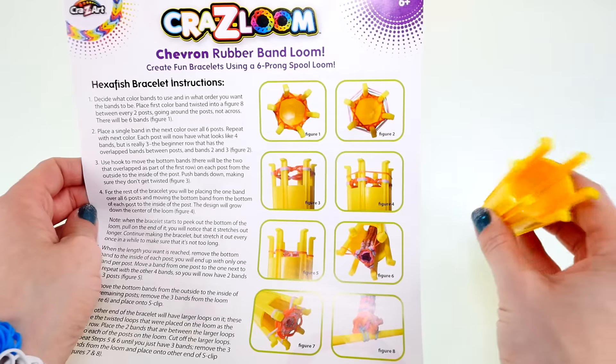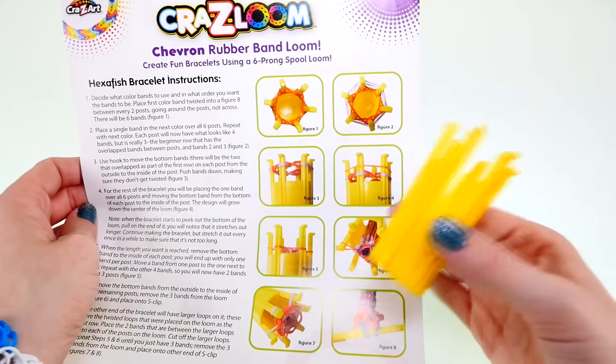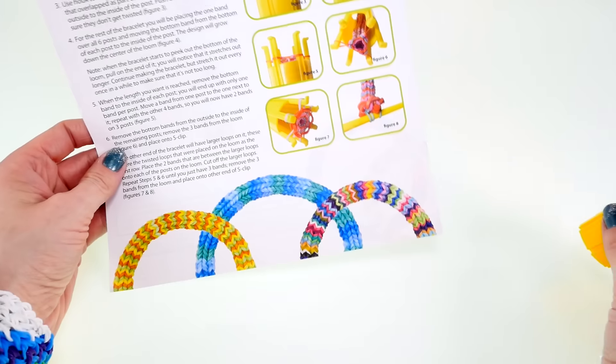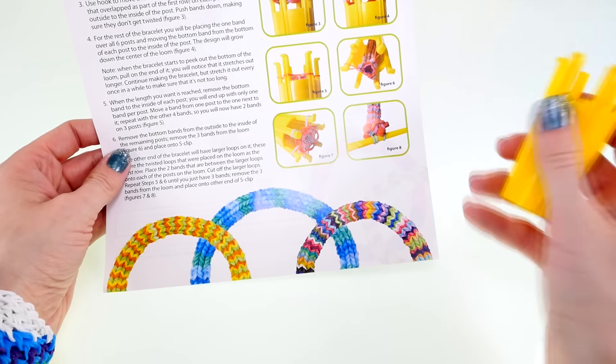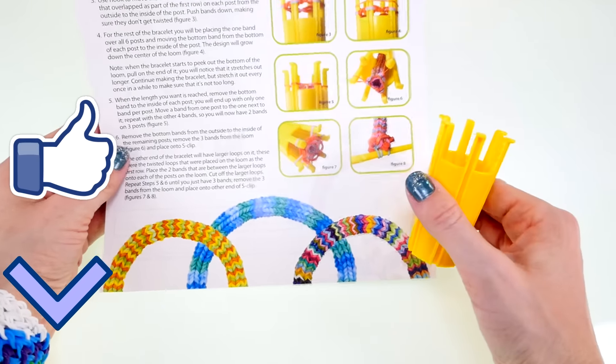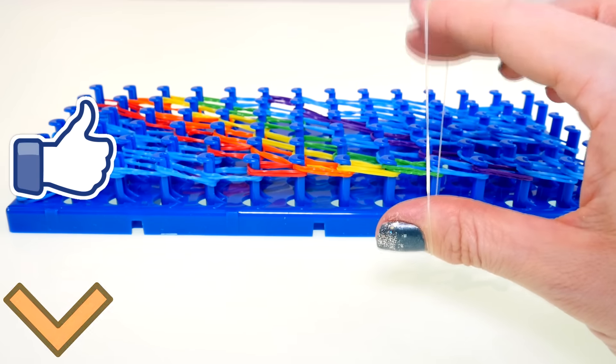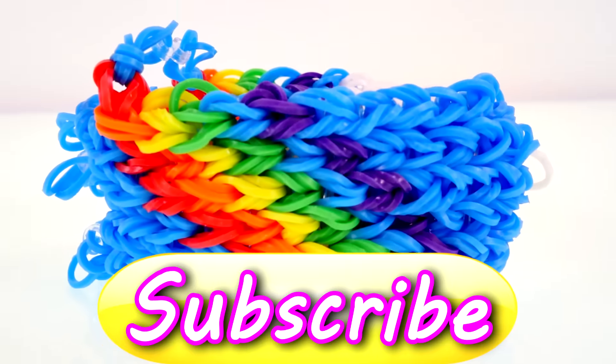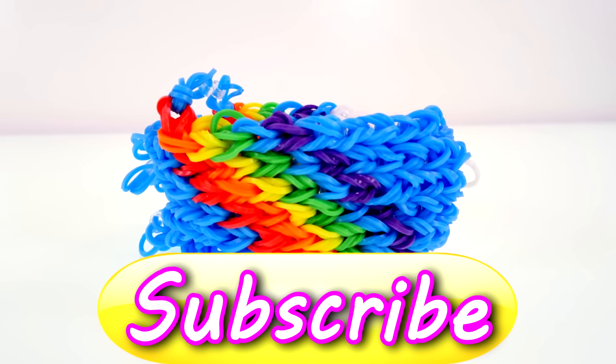And this kit also includes a hexagonal loom. You can make these fun chevron bracelets with it. So if you guys would like to see me make one of these bracelets, just click on the thumbs up and be sure to leave me a comment and let me know if you have any tips or tricks for making crazy loom bracelets. This is Kaylee for DCTC, and thanks for watching.